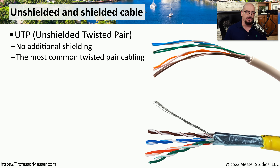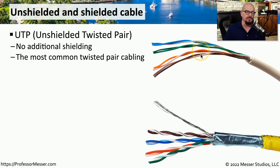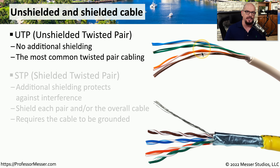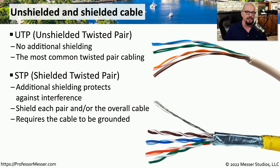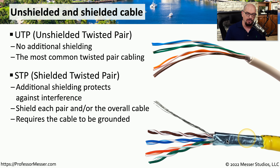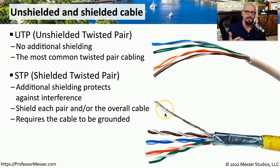For most cable runs we use UTP, or unshielded twisted pair — a cable type with no special shielding around the cables or individual wires. If you're using ethernet cables at home, you're probably using UTP. In environments with much more interference, or where you want additional protection, you might use STP, or shielded twisted pair. There might be a shield around the entire cable or around the individual wires themselves, and most shielded cables also include a grounding wire for additional protection.